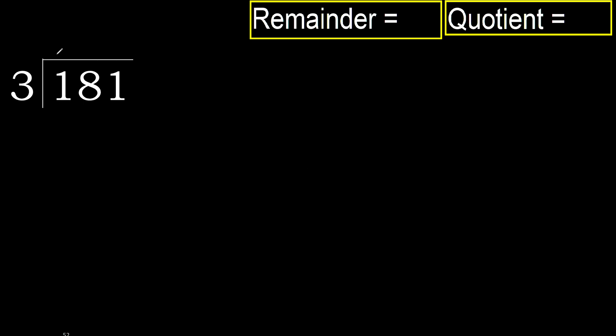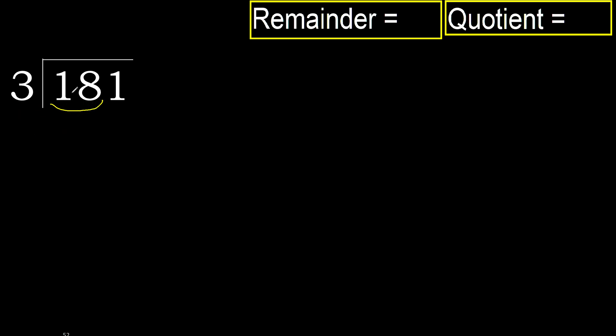181 divided by 3. 1 is less, therefore next. 18 is not less, therefore with 18.